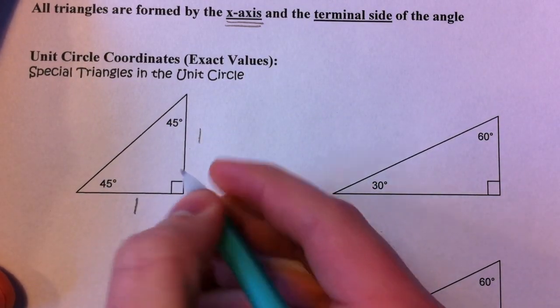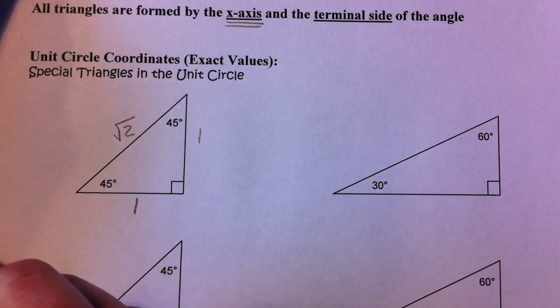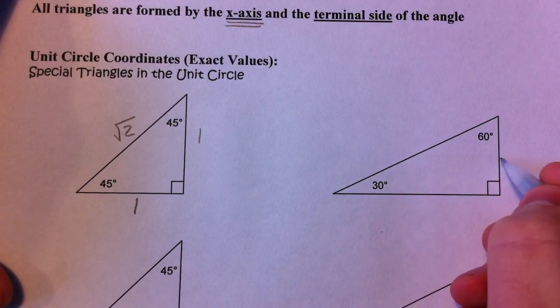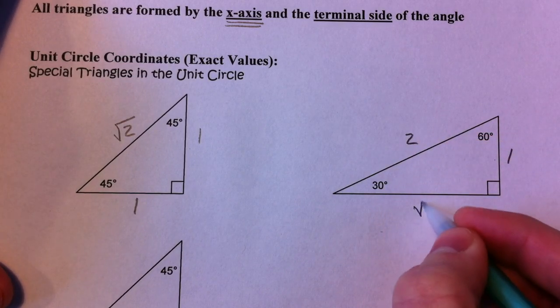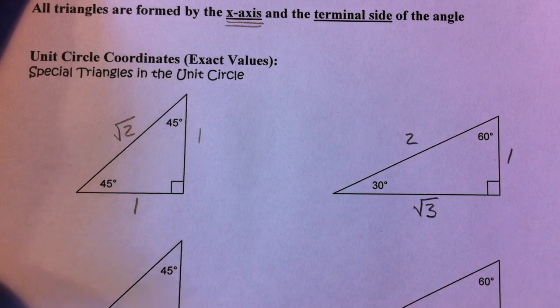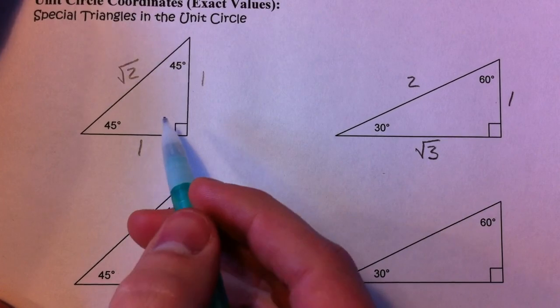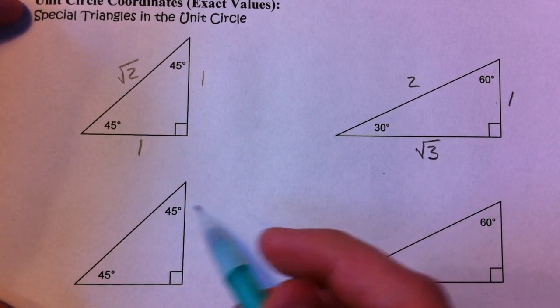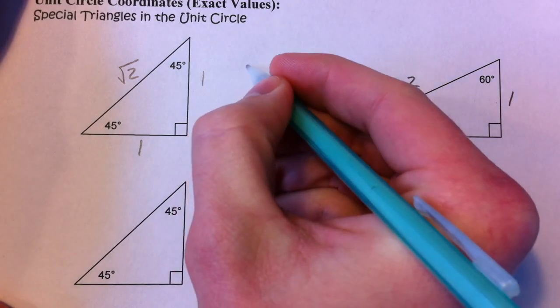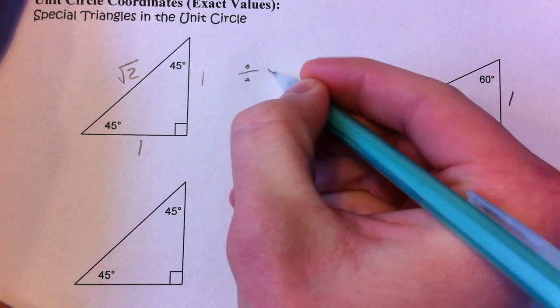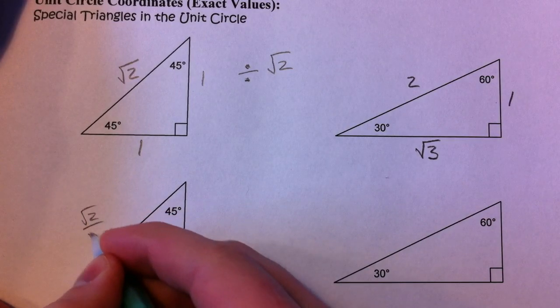If you have 1 and 1 and square root of 2, or we dealt with it relative to the short side, the hypotenuse is twice as long, and the long side is square root of 3 times as long. What we want to do is now go to the unit circle with this. And the unit circle has a hypotenuse of 1. So if we divide all of these by square root of 2,